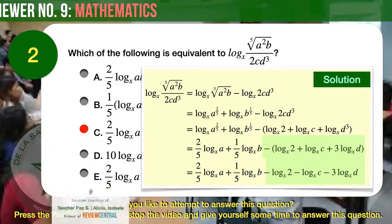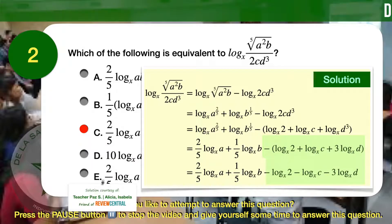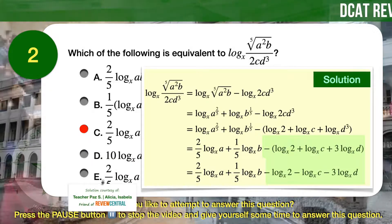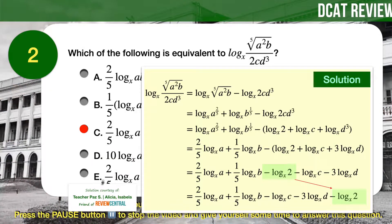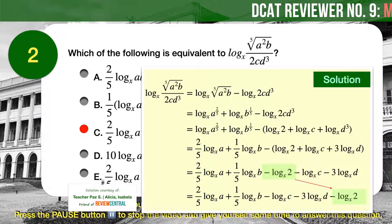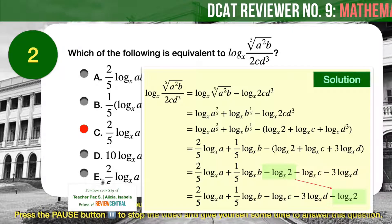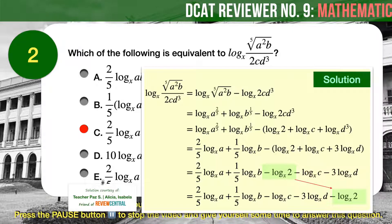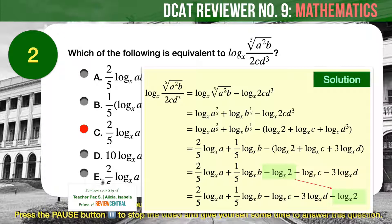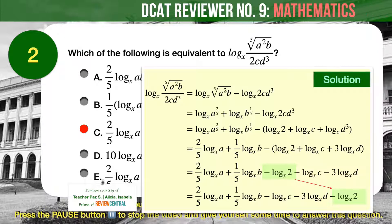We then distribute the minus sign to the rest of the expressions. The only remaining step is simply to rearrange the terms, and you'll find that the expression we arrived at is exactly the one in answer choice C.